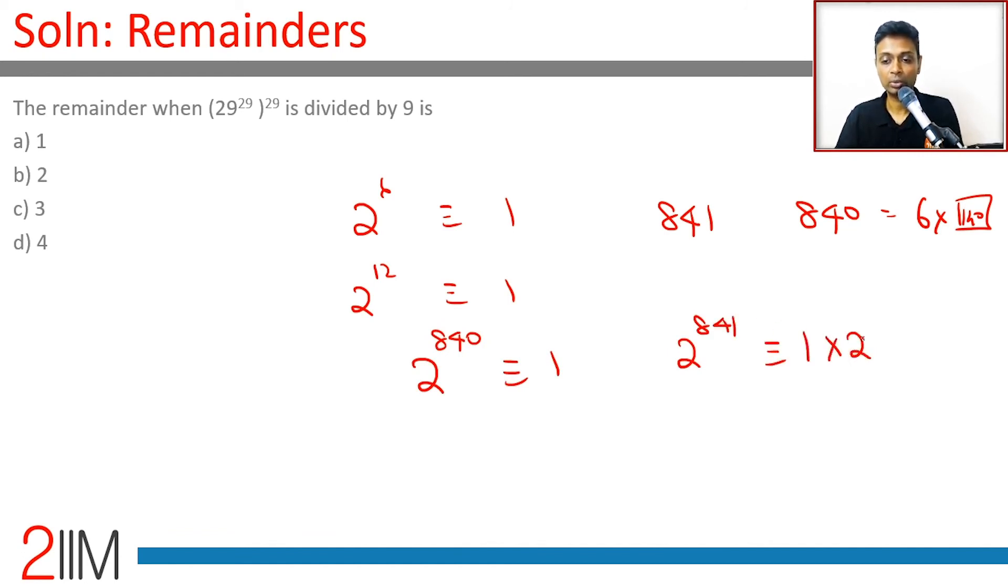That's 2. That's the answer we're looking for. First, simplify 29 to 2, then find the cycle, and then you're through.